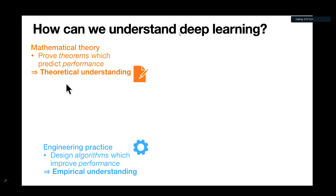In practice, we try to design algorithms which improve performance, and this gives us empirical understanding of what works and what doesn't. On the other hand, in theory — if I make a stereotypical characterization — it tries to prove theorems which predict performance. This gives us theoretical understanding where we can prove and calculate everything. We've made a lot of progress, but we need both, and the gap between the two has been widening. It's rarer and rarer that theory actually impacts practice, and also rare that practice informs theory.